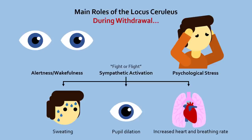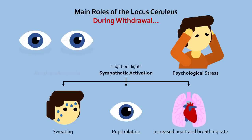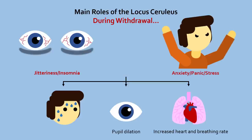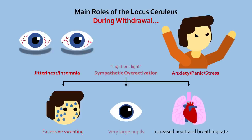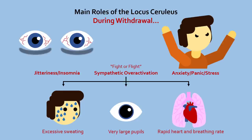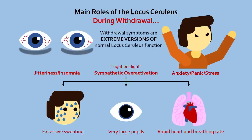During withdrawal, when there aren't any opioids to cancel out the increased cAMP levels, neurons in the locus coeruleus go into overdrive to cause jitteriness, anxiety, excessive sweating, wide dilated pupils, and extremely fast heart and breathing rate. These withdrawal symptoms are all extreme versions of the normal functions of the locus coeruleus.